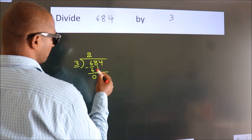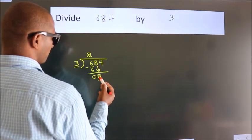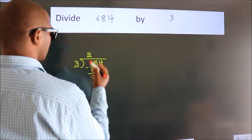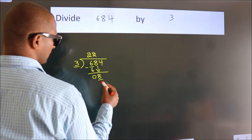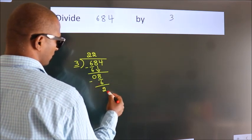After this, bring down the beside number, so 8 down, so 8. A number close to 8 in 3 table is 3 2s, 6. Now, we subtract, we get 2.